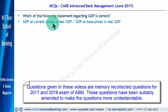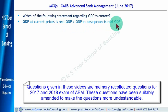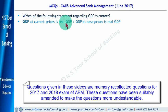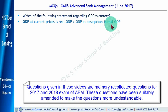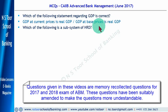GDP at current price is called real GDP, or GDP at base price is called real GDP? Jab GDP ka calculation at current prices hai, then it is called nominal GDP. Jab GDP ka calculation base price ke upra hai, then we call it real GDP. So the answer is: GDP at base price is real GDP.